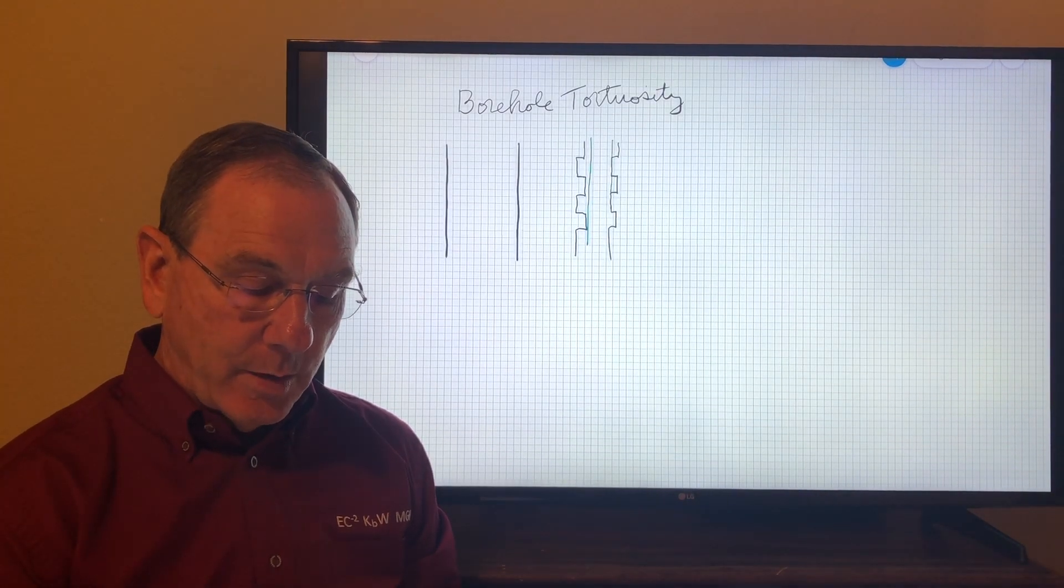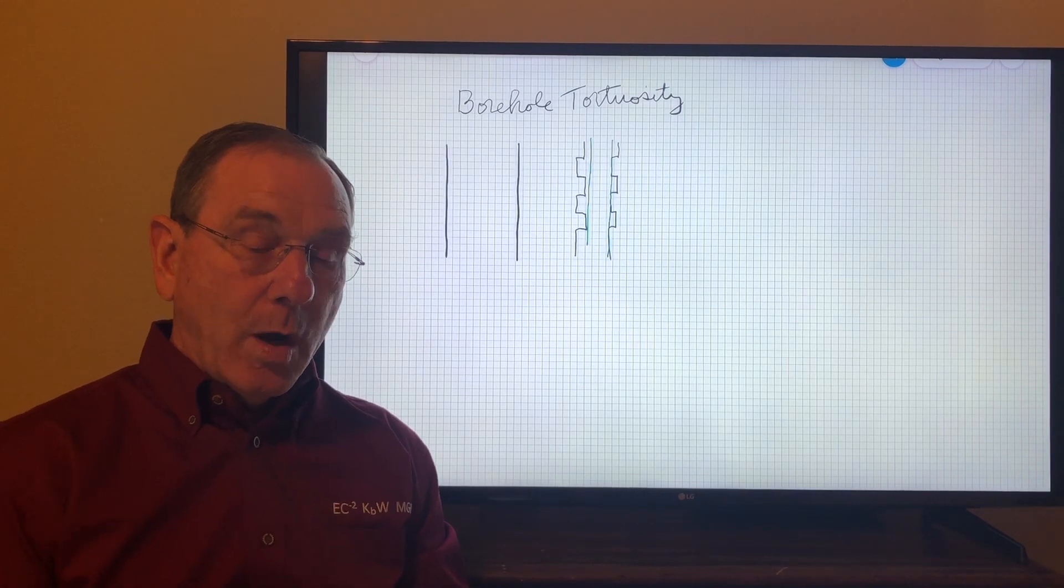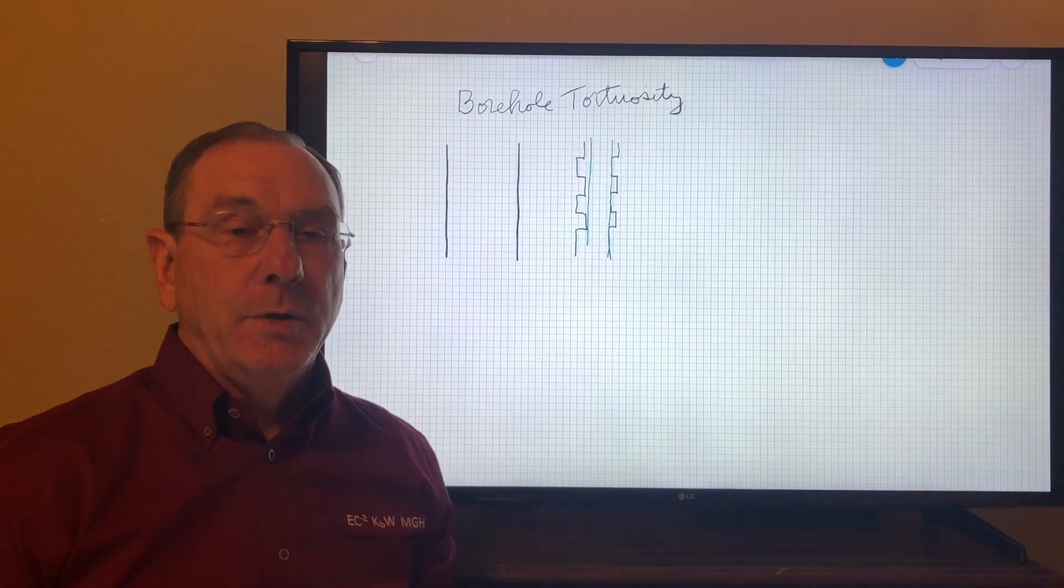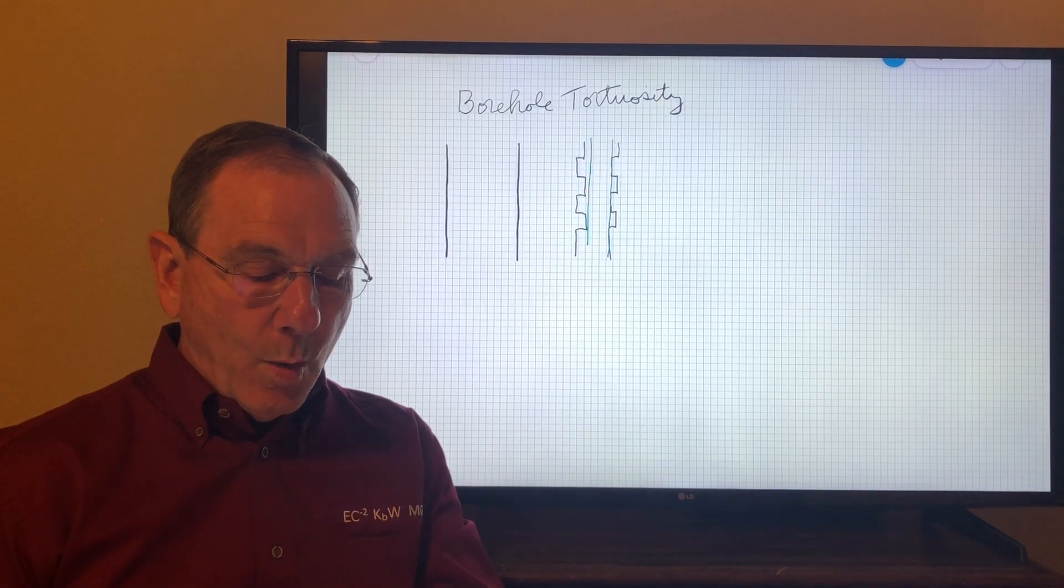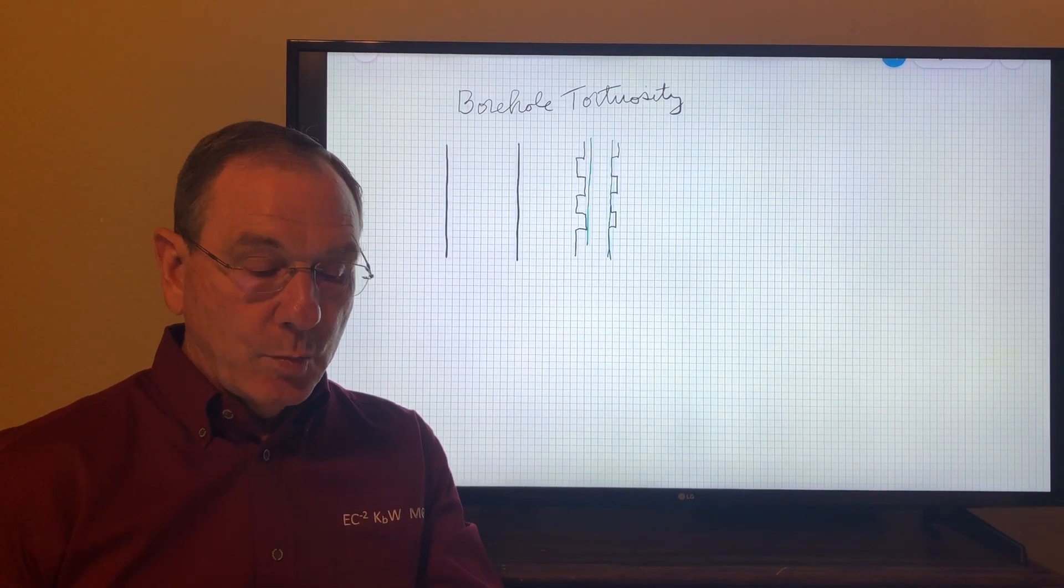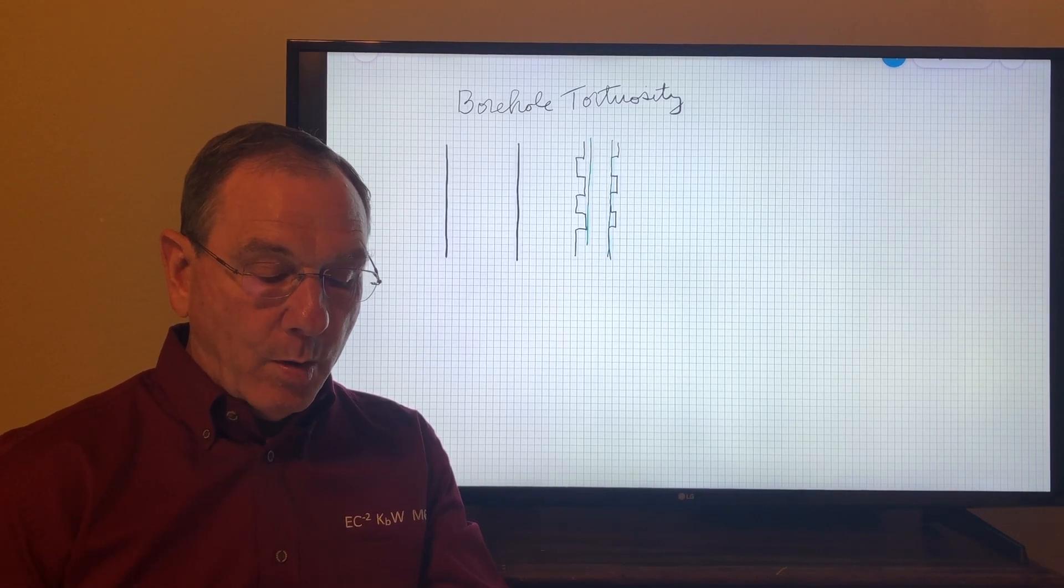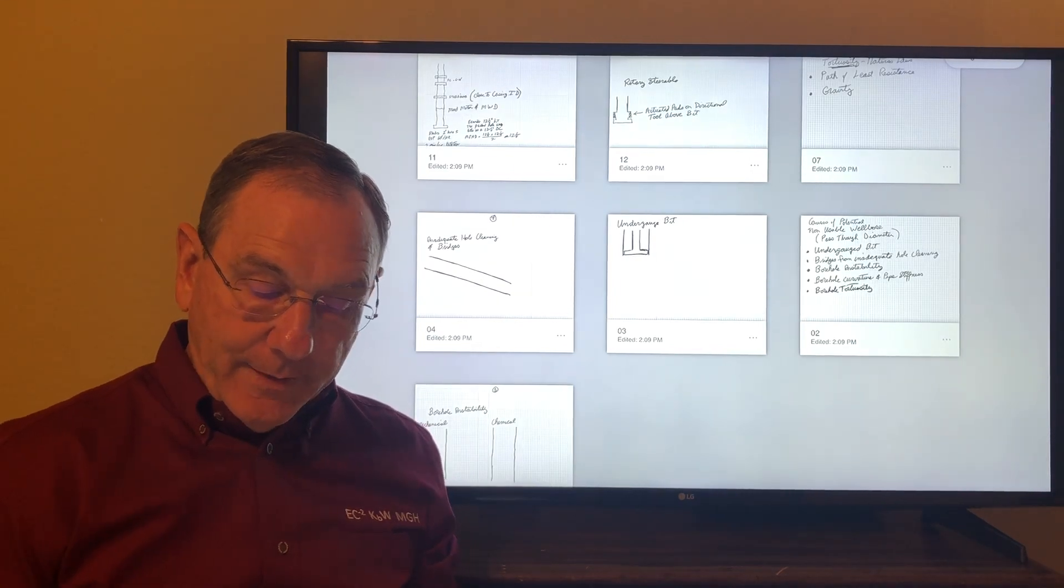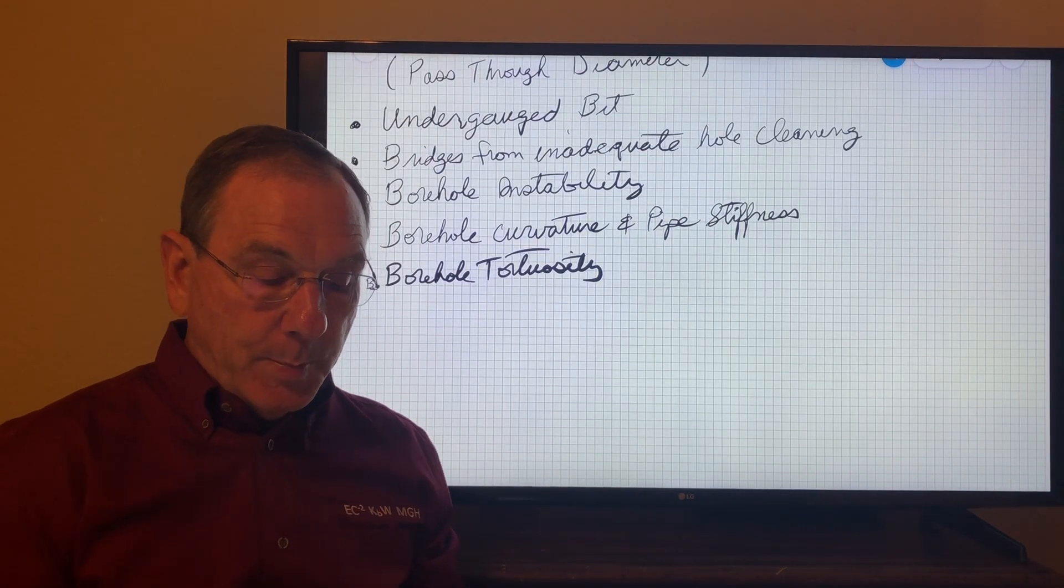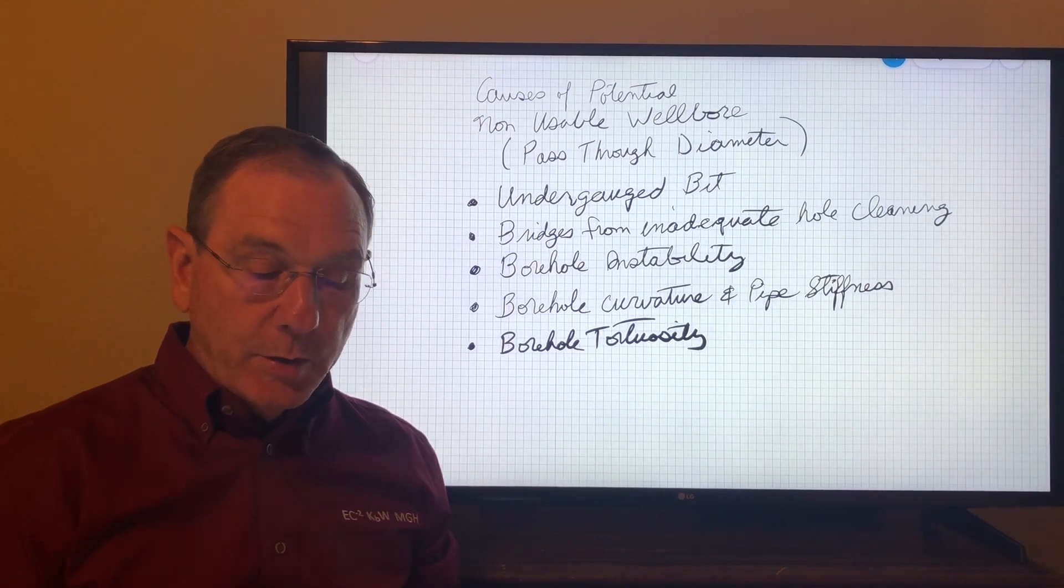There are several causes that we could have for a non-usable wellbore, and hole tortuosity is just one of several. But we're only going to talk about borehole tortuosity today and some other potential causes of not having a usable wellbore in which the pass-through diameter is not equal to the bit diameter.